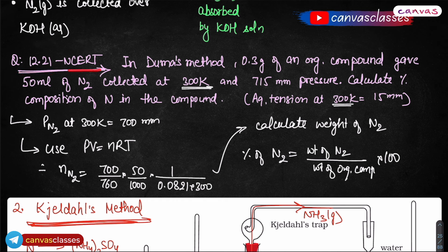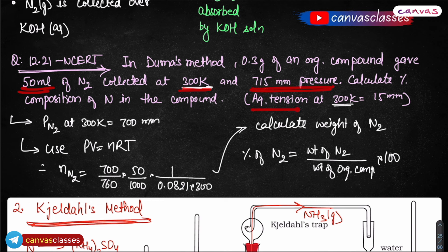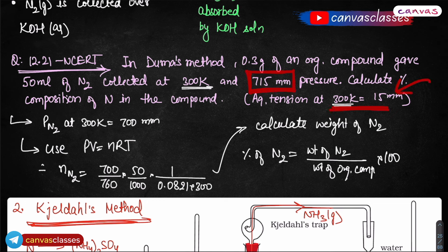NCERT solved example 12.21: In Dumas method, 0.3 gram of an organic compound gave 50 mL of nitrogen collected at 300 Kelvin. You are given the volume, temperature, and the original weight of the organic compound (0.3 g) — this will be used at the end to calculate the percentage. The pressure data is also given — the total pressure of N₂ and water vapor combined was 715 mmHg, and the water vapor component is 15 mmHg. So subtract 15 from 715: the pressure of pure nitrogen gas at 300 K is 700 mmHg.